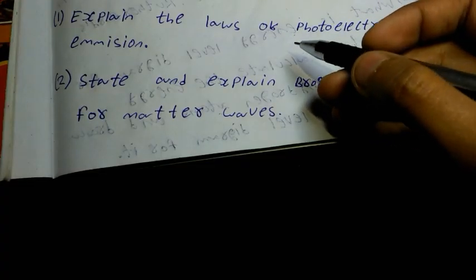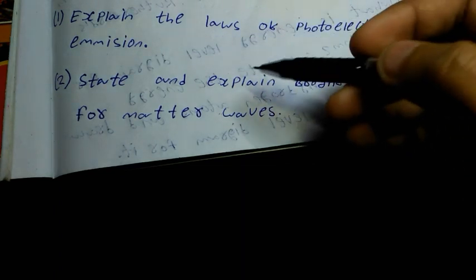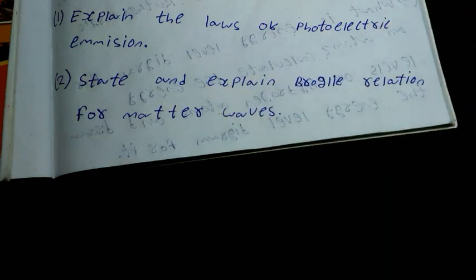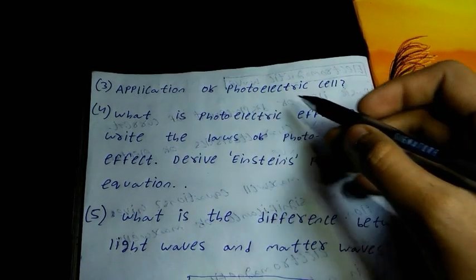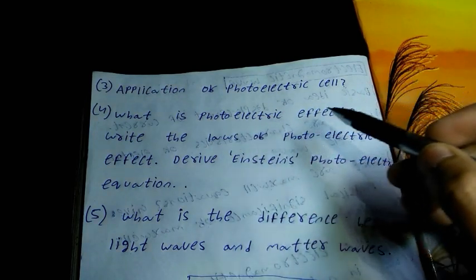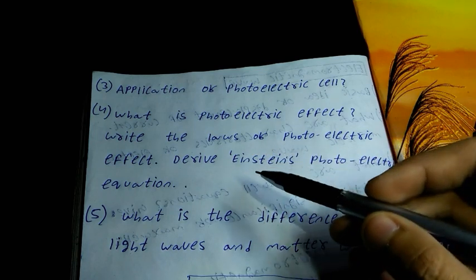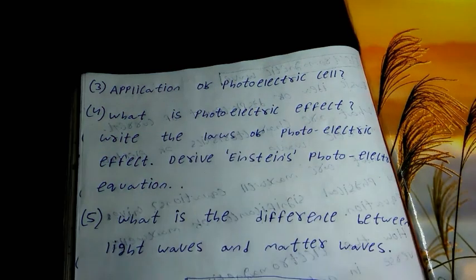Chapter 7: The question is explain the law of photoelectric emission. The question is state and explain the de Broglie relation for matter waves. The application of photoelectric cell. Number 4 question is what is photoelectric effect? Write the laws of photoelectric effect.